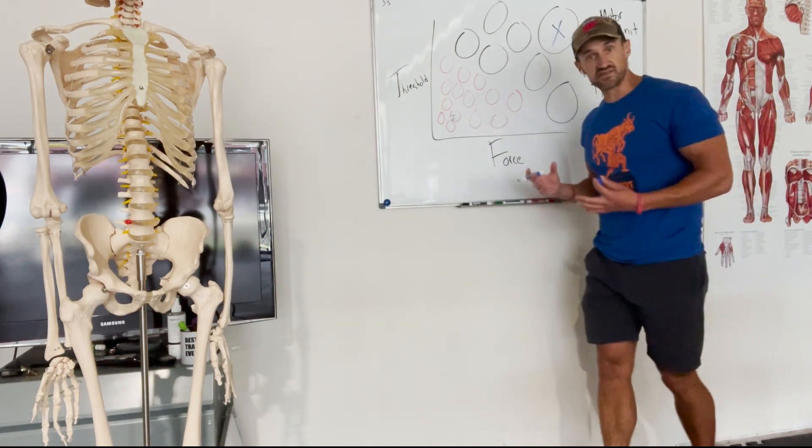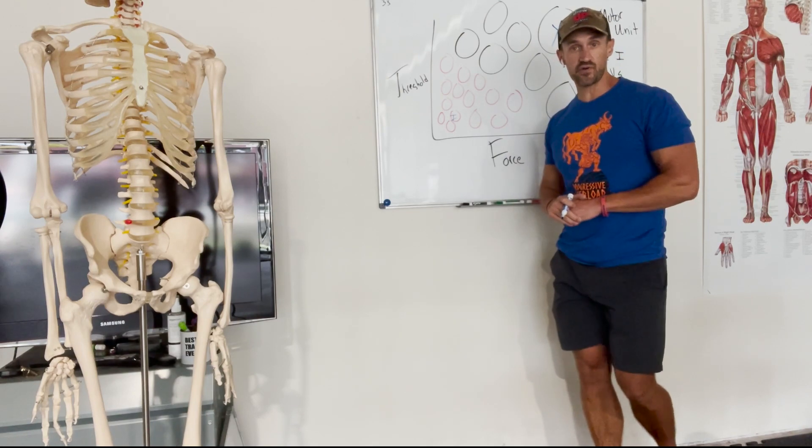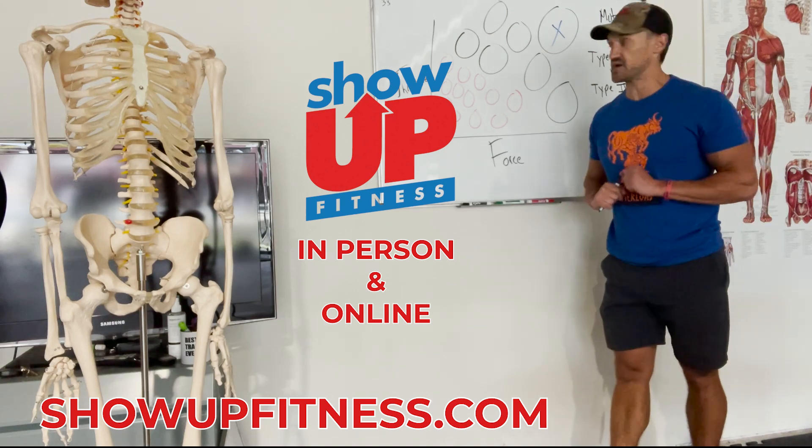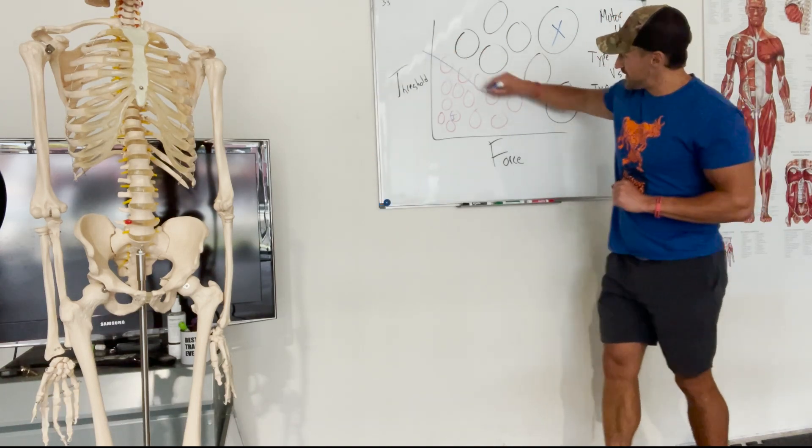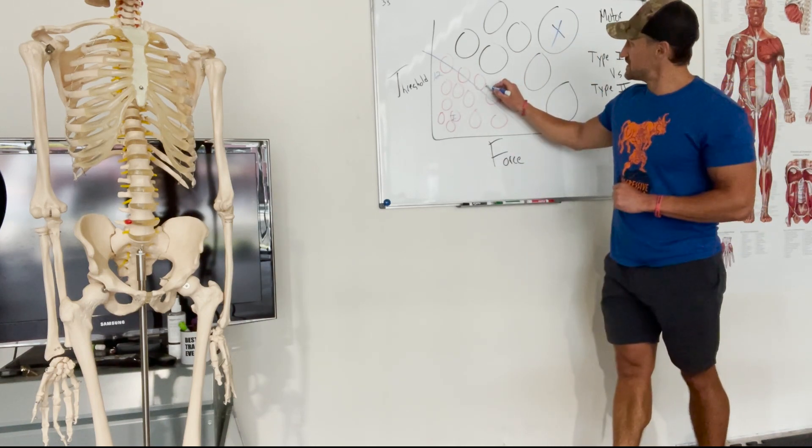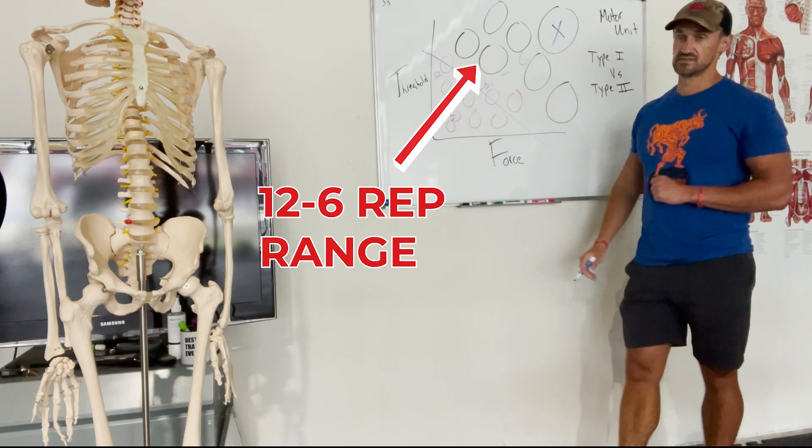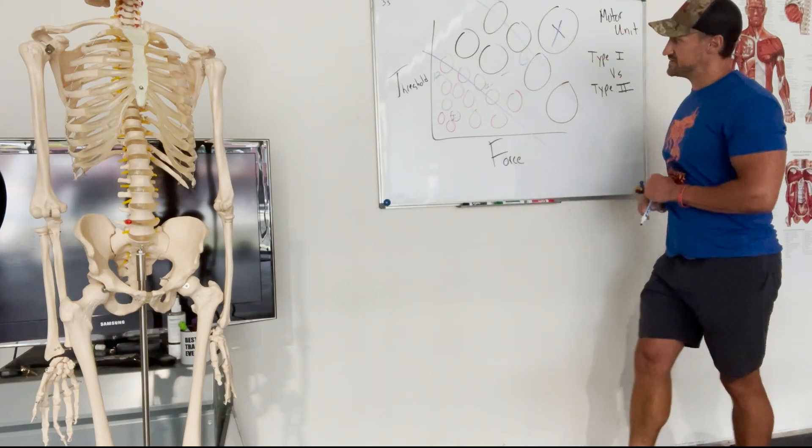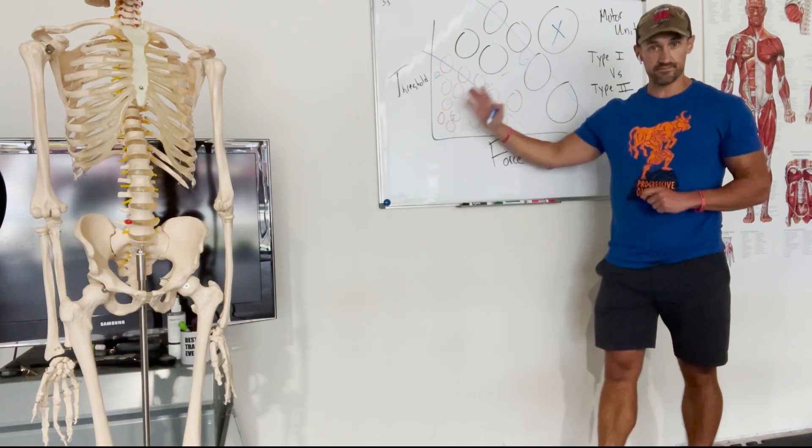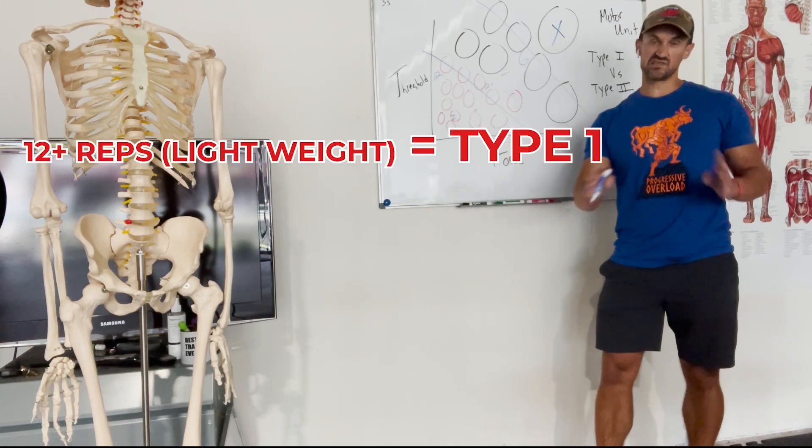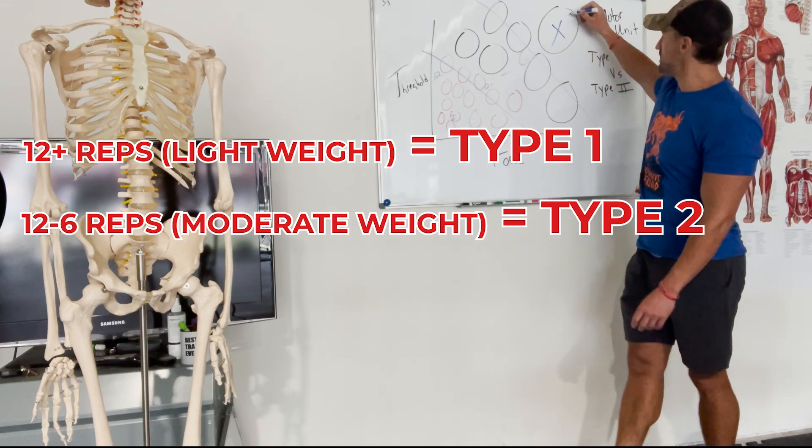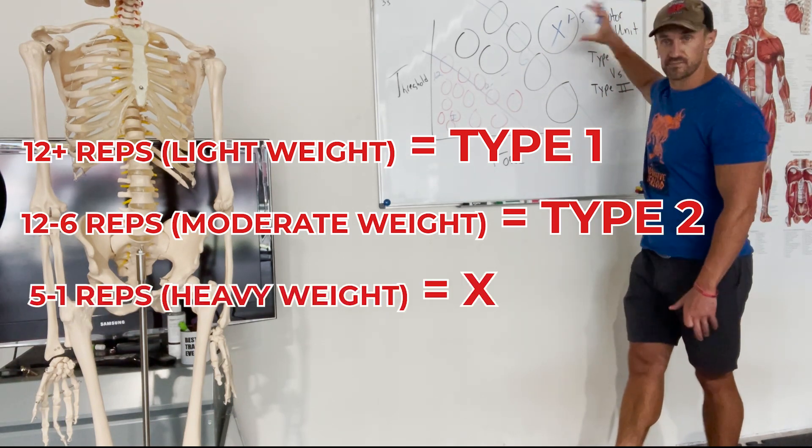So what happens is, as the force and threshold go up, we're going to recruit more type 2. These are the type 2x muscle fibers. These are the type 1. So how I like to explain this to our interns in our internship program. We're online, we're also in person, we have weekend seminars. Check us out at showupfitness.com. I like to draw a line. And this is going to be roughly 12 reps. And this will be 12 to 6 reps. So we've got this divide. When we're lifting light weights, predominantly type 1. When we go to like 6 to 12, that spectrum is going to be more type 2. And when you go real heavy, 1 to 5, you're going to get the big powerful x's.